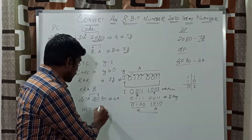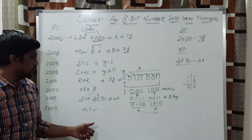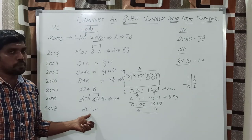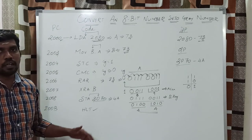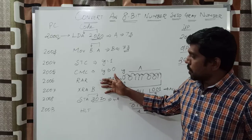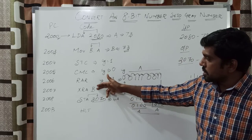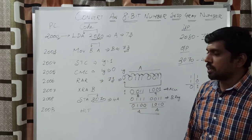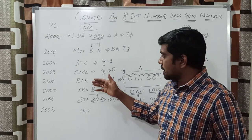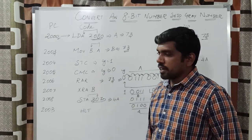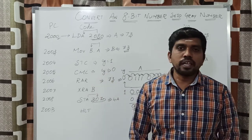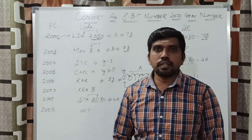The final instruction is HLT, which represents the end of the program. The two key instructions performing the main role are RAR and XOR. Thanks for watching our channel.